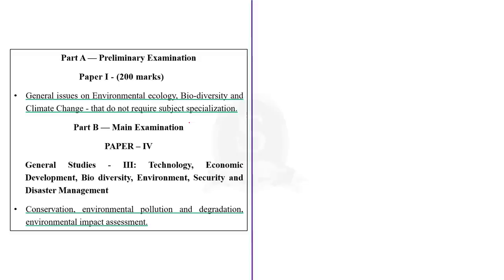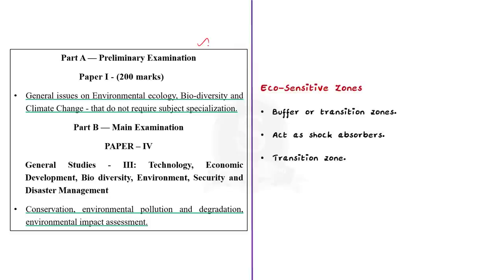The syllabus for this discussion is highlighted here. Interested aspirants can pause the video and go through it. Now let's start our discussion with a question: what are eco-sensitive zones? Eco-sensitive zones, which are otherwise called eco-fragile zones or buffer or transition zones, are notified around highly protected areas. They are notified to act as a transition zone from areas of high protection to areas involving less protection.